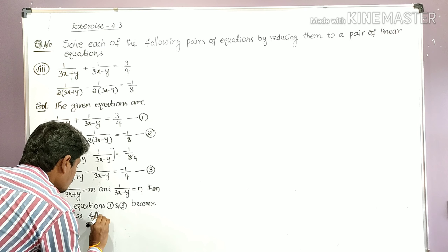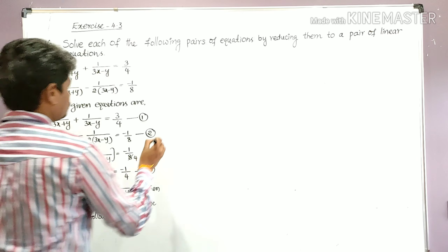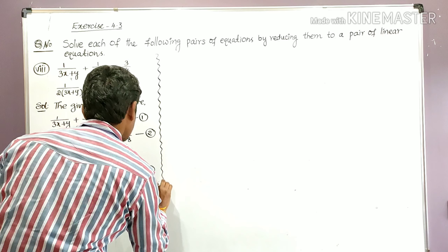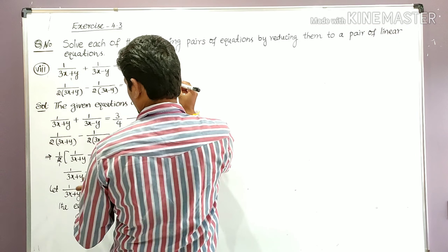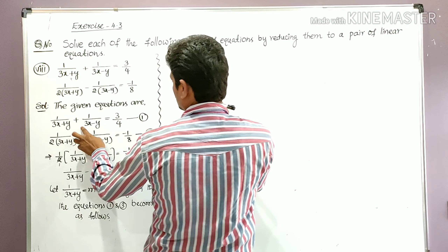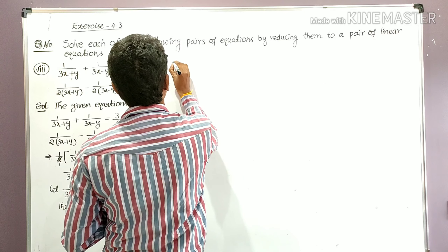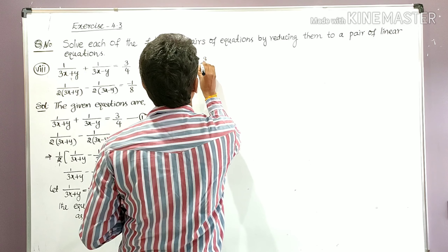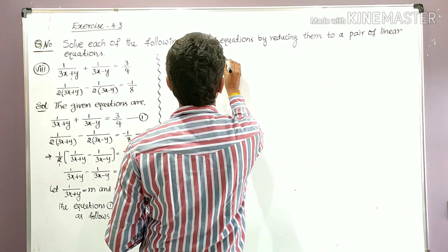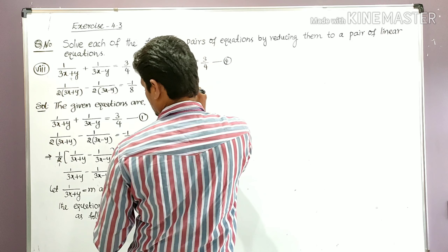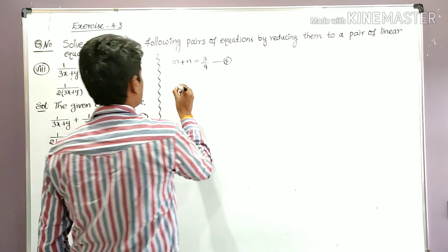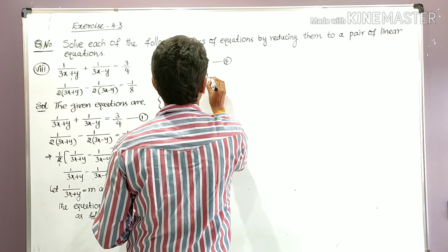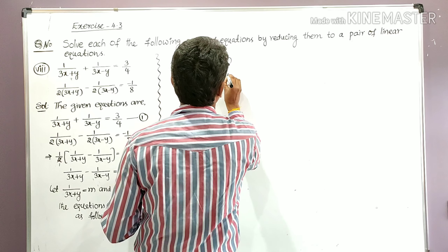If 1/(3x + y) = m, then equation 1 becomes: m + n = 3/4. Let this be equation number 4. And equation 3 becomes: m − n = −1/4. Let this be equation number 5.